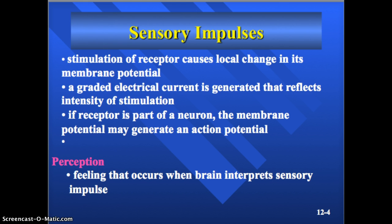How an impulse is sent: stimulation of the receptor causes a local change in the membrane potential, called a receptor potential. A graded electrical current is generated that reflects the intensity of the stimulation — a very strong current for strong stimulation, or a weak current for weak stimulation. If the receptor is part of the neuron's dendrites, the membrane potential will generate an action potential and send it onto the sensory fiber. If it's another cell not directly on the neuron, the signal needs to be transferred to a sensory neuron before it triggers an action potential.